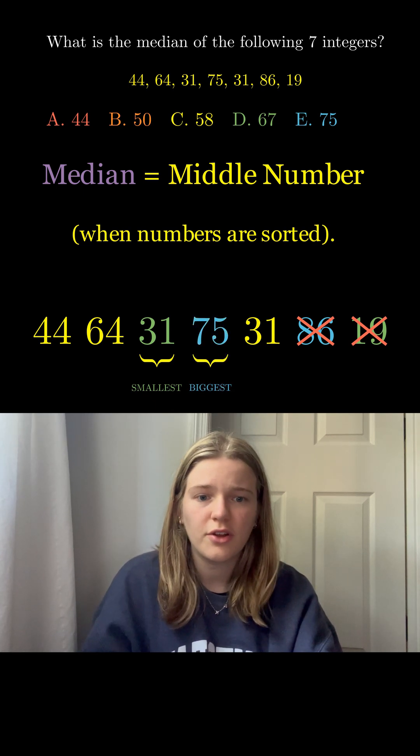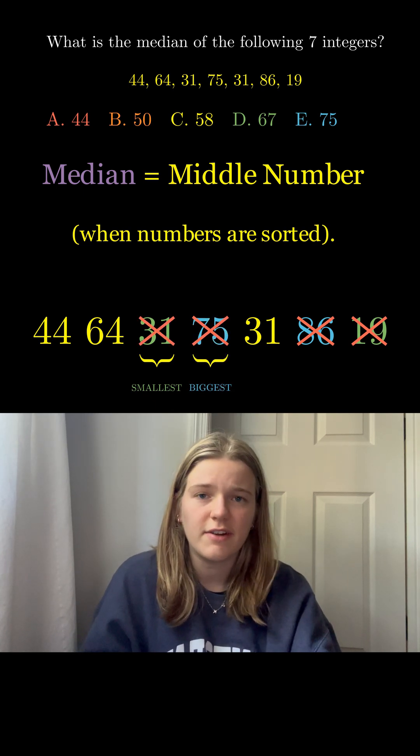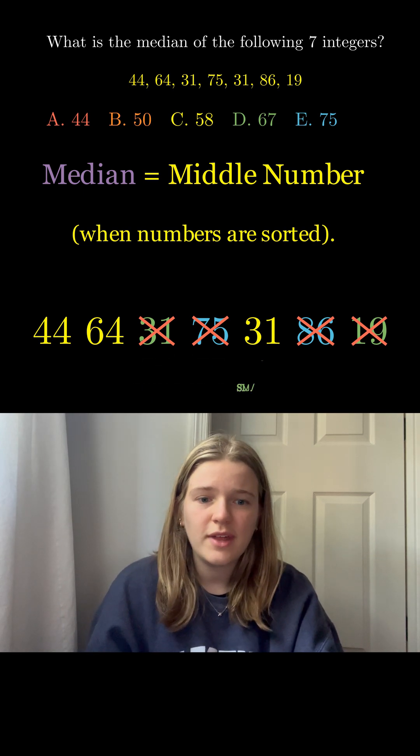The new smallest number is either of the 31s and the new biggest is 75. And we eliminate them. And we do that one more time.